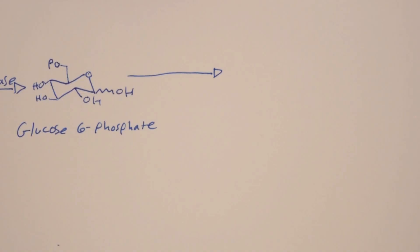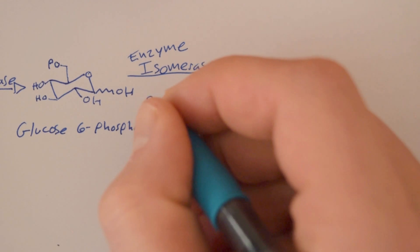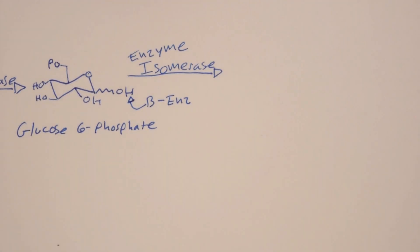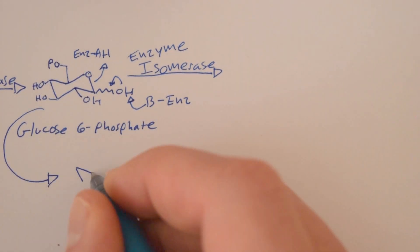The next enzyme is isomerase, and after a few intermediates, we get fructose 6-phosphate.